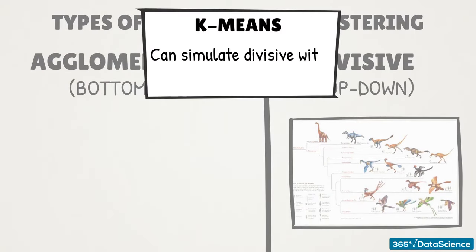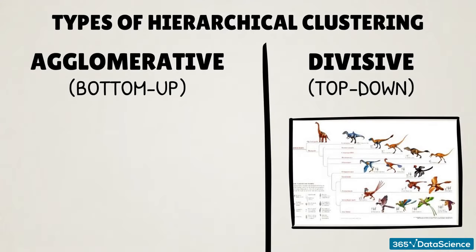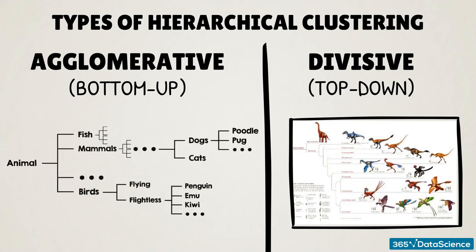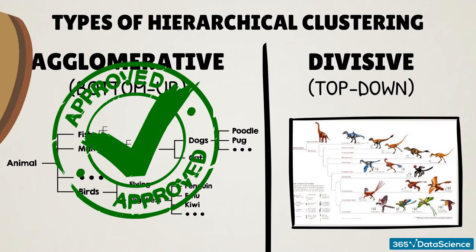When it comes to agglomerative clustering, the approach is bottom-up. We start from different dog and cat breeds, cluster them into dogs and cats respectively, and then continue pairing up species until we reach the animal cluster. Agglomerative and divisive clustering should reach similar results, but agglomerative is much easier to solve mathematically. This is the other clustering method we will explore: agglomerative hierarchical clustering.